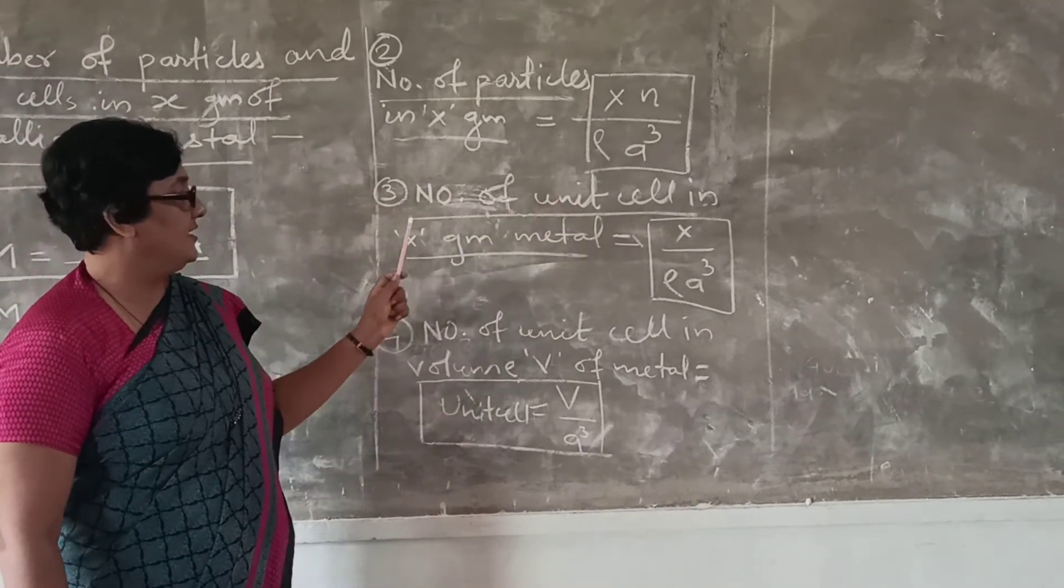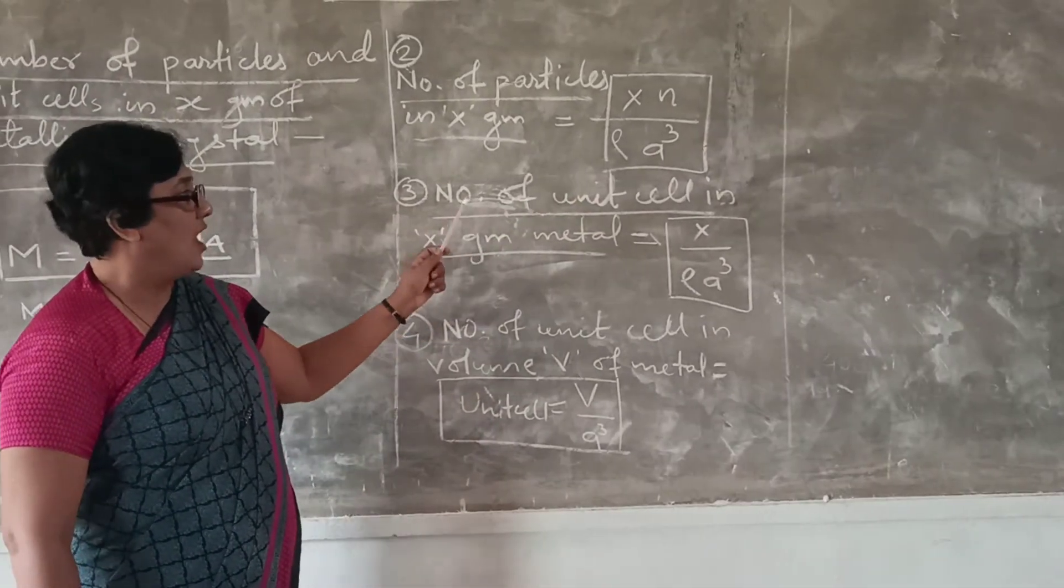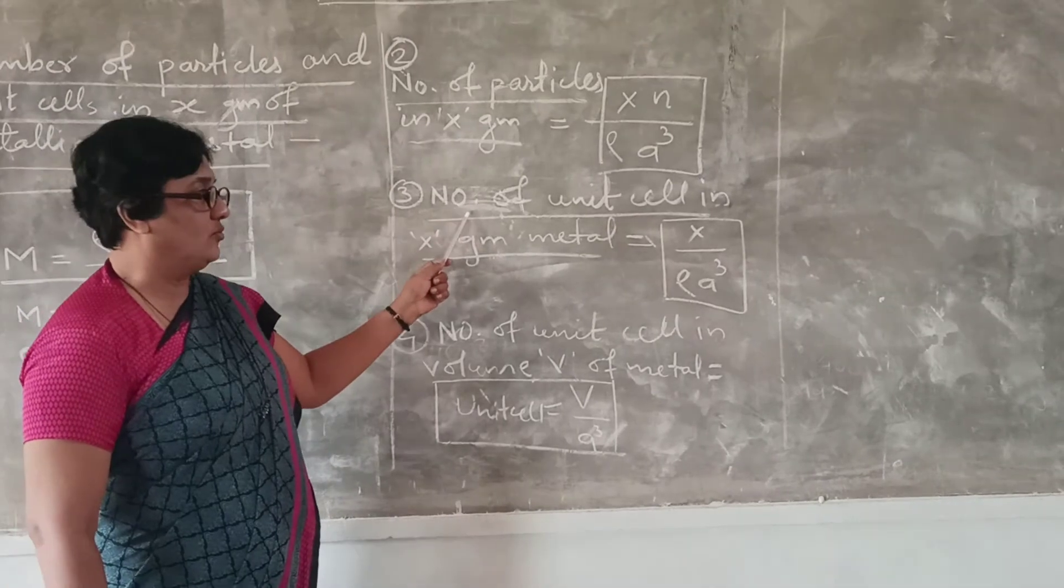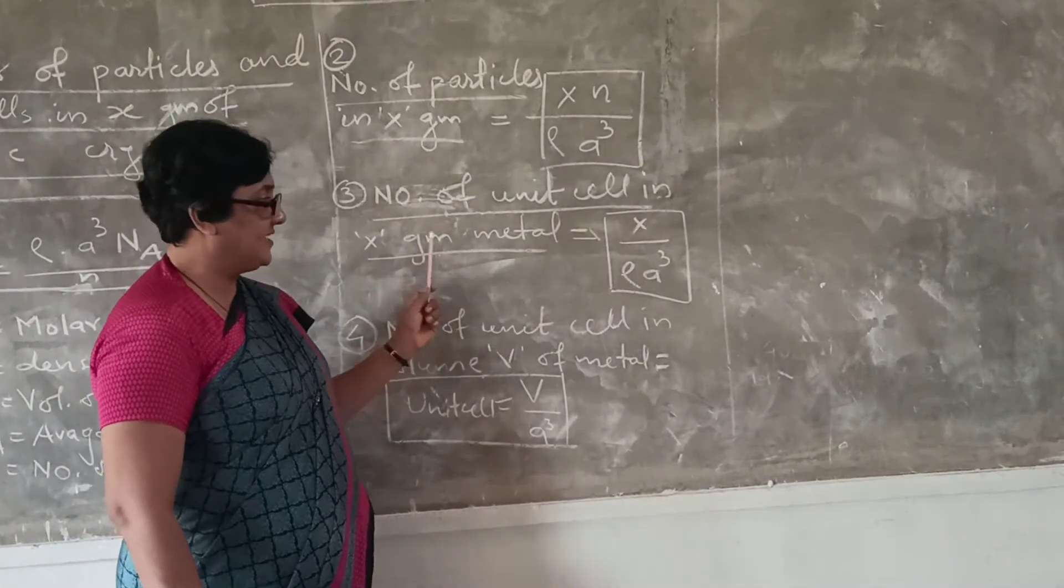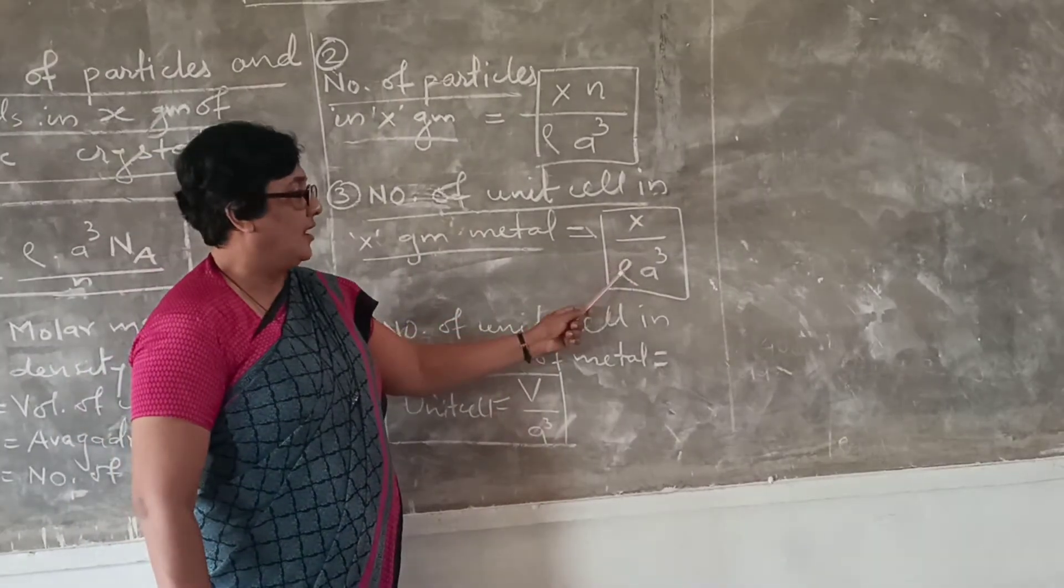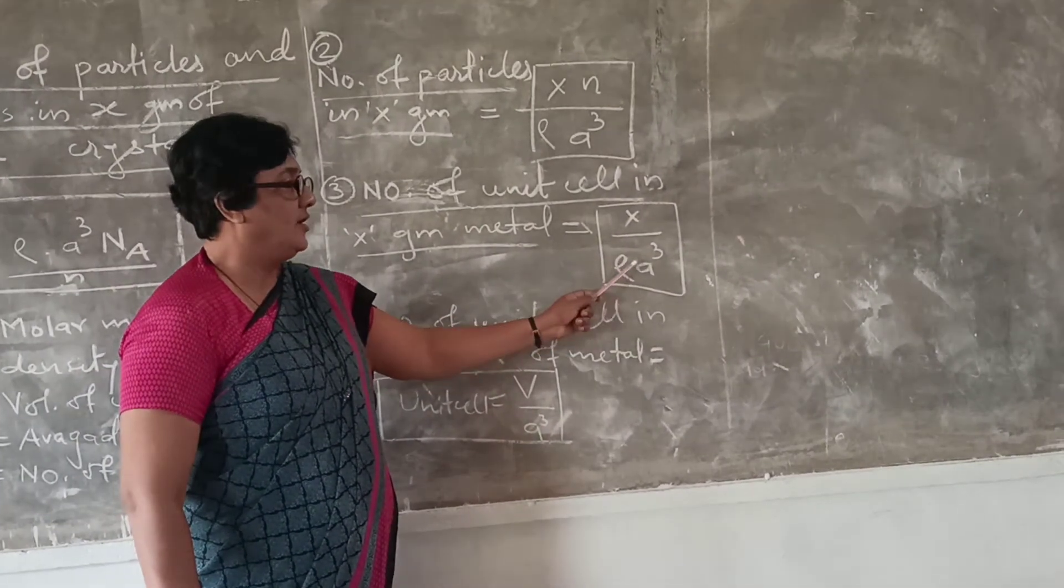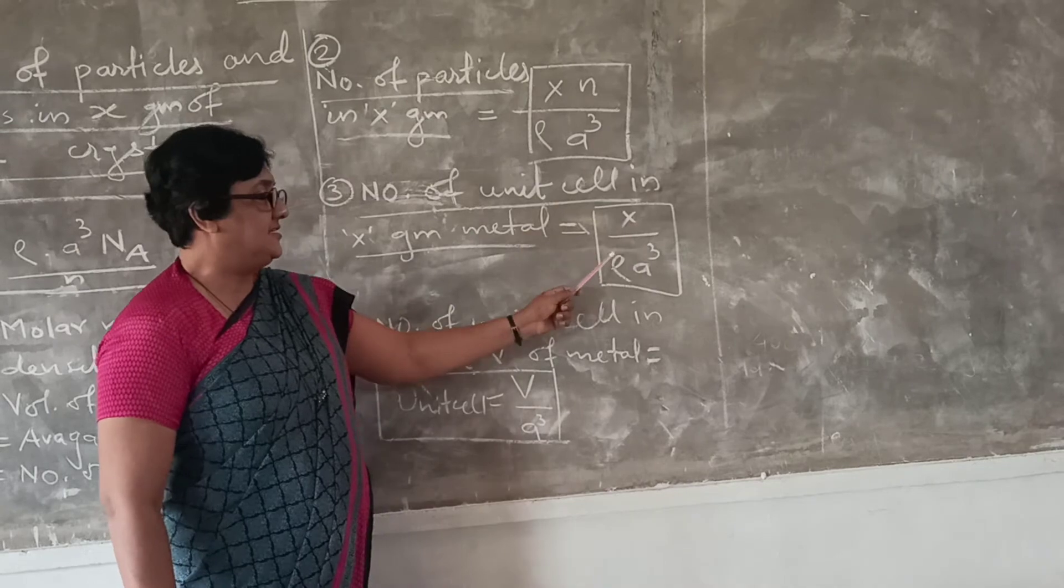Third formula, number of particles in x gram of the unit cell. How the number of units cell can be calculated? It is given by formula x, means the x gram which is given, divided by rho into A cube. This is the third formula.